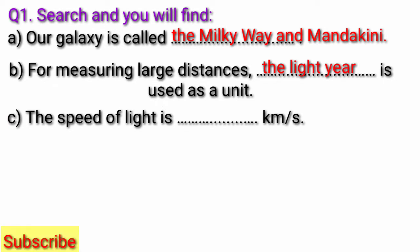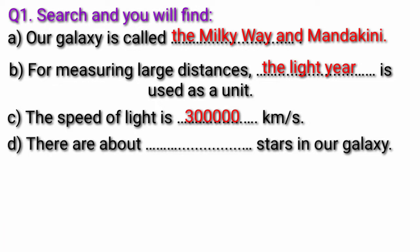Question C, the speed of light is fill in the blank kilometer per second. Answer, the speed of light is three lakh kilometer per second. Question D, there are about fill in the blank stars in our galaxy. Answer, there are about hundred billion stars in our galaxy.